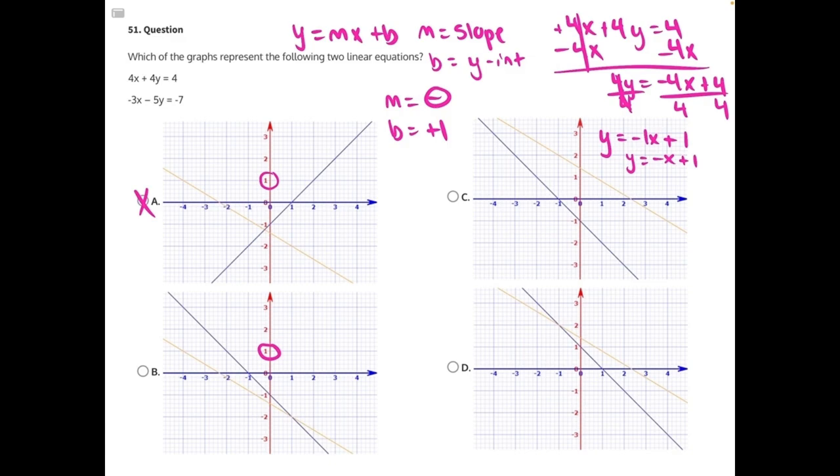B, same thing, neither of the graphs are crossing the y-axis at 1, incorrect. C, one is almost crossing at 1, but not quite. So C is incorrect.